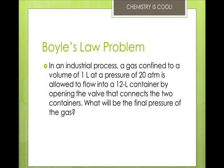In an industrial process, a gas confined to a volume of 1 liter at a pressure of 20 atmospheres is allowed to flow into a 12-liter container by operating the valve that connects the two containers. What will be the final pressure of the gas? The final volume of the gas is 1 plus 12 liters, so 13 liters. Using V1 times P1 equals V2 times P2, we solve for P2 by dividing V1 times P1 by V2: 20 atmospheres times 1 liter divided by 13 liters gives 1.5 atmospheres. Note that there is no need to make explicit use of any formula in problems of this kind.